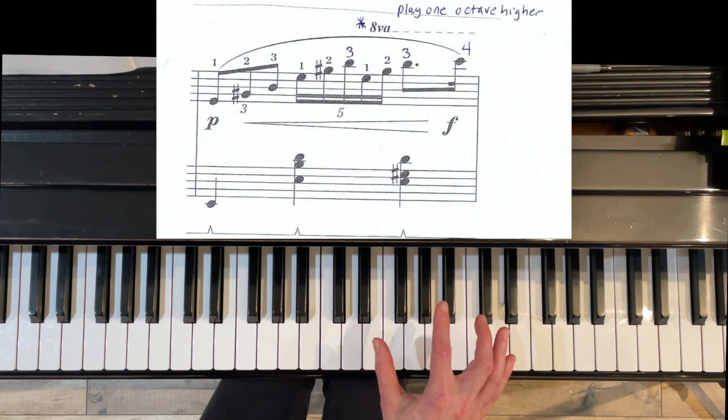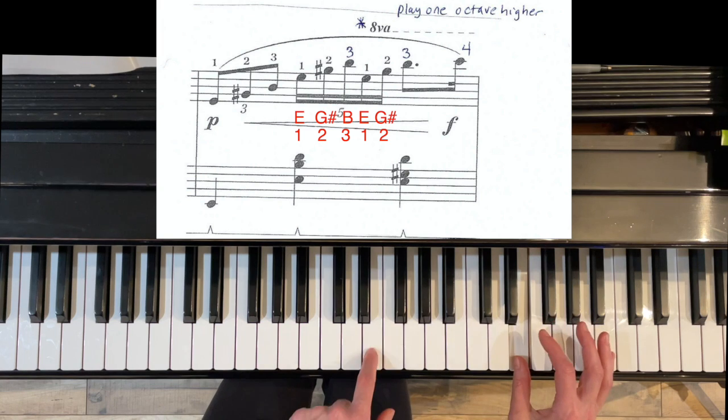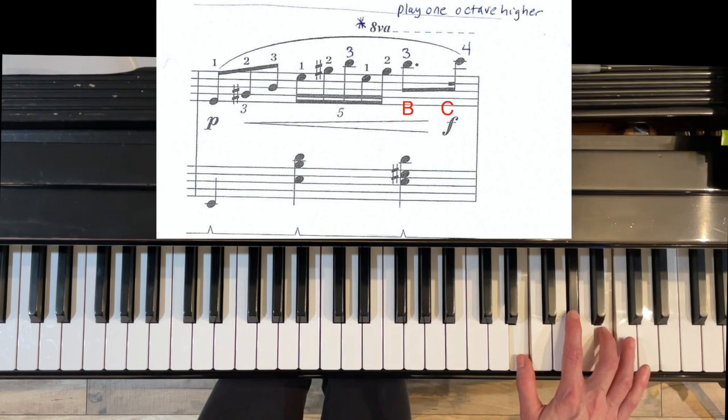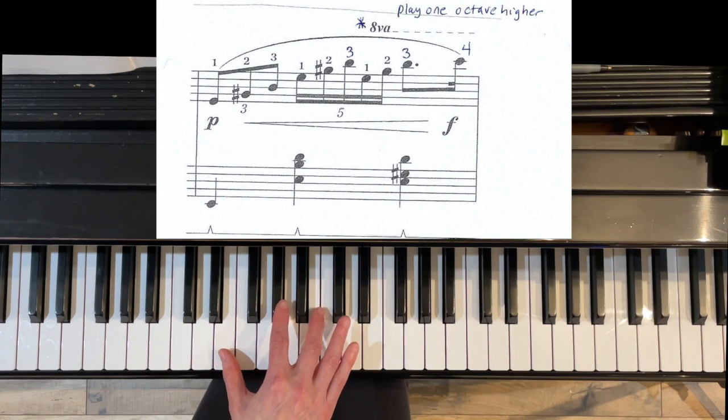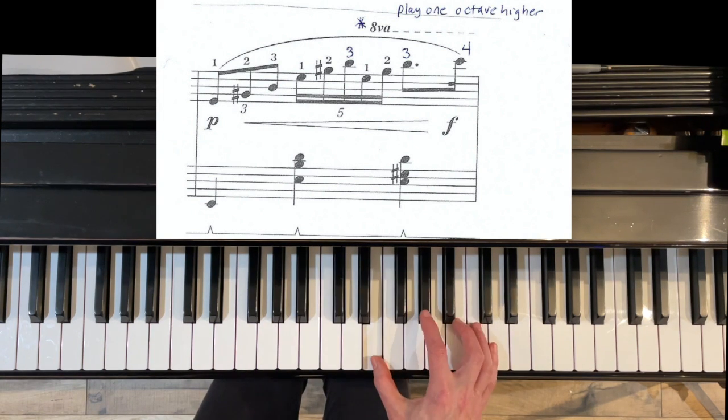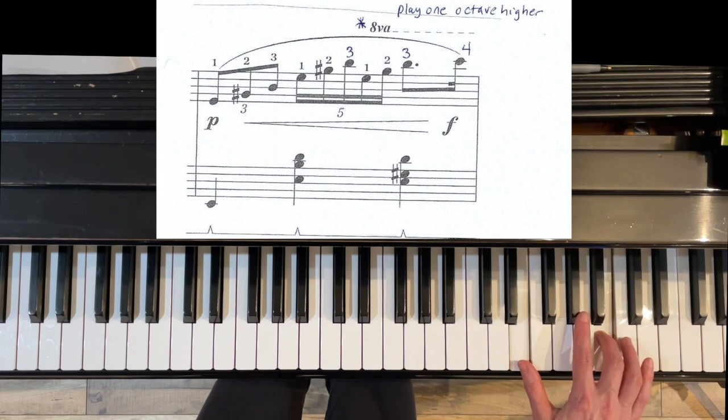So beat 2: 1, 2, 3. Then we're going to play 8VA octave higher, octave higher, and then that B again, and then 4th finger on C. So the notes are E, G sharp, B, E, G sharp, B, C.